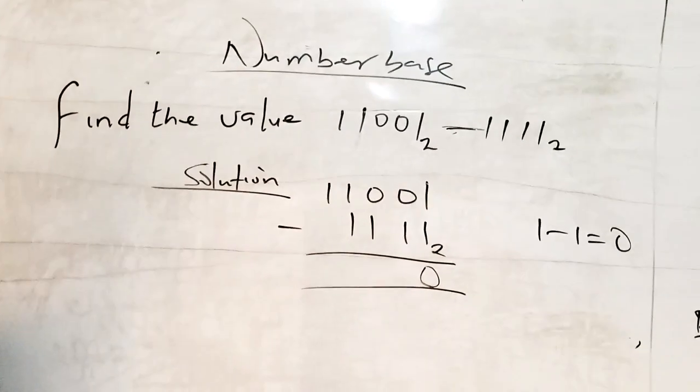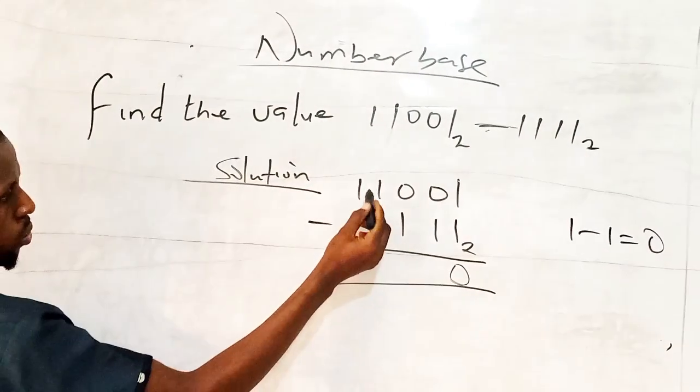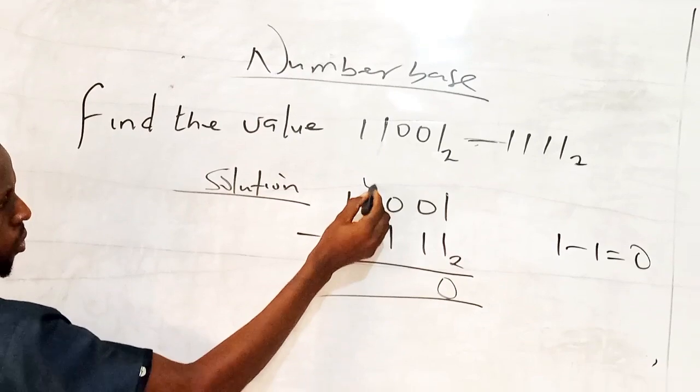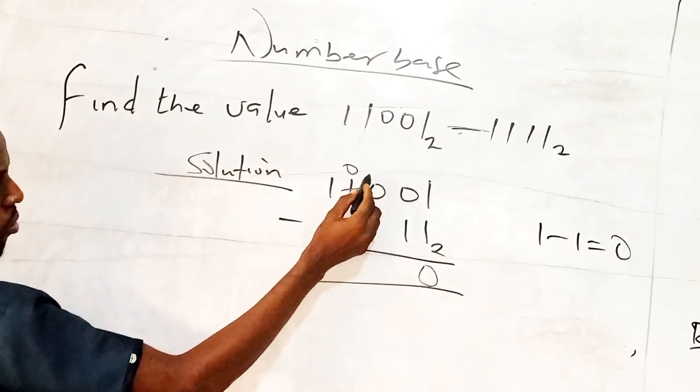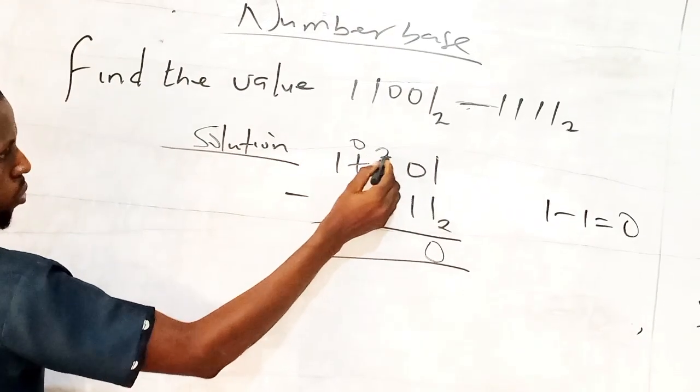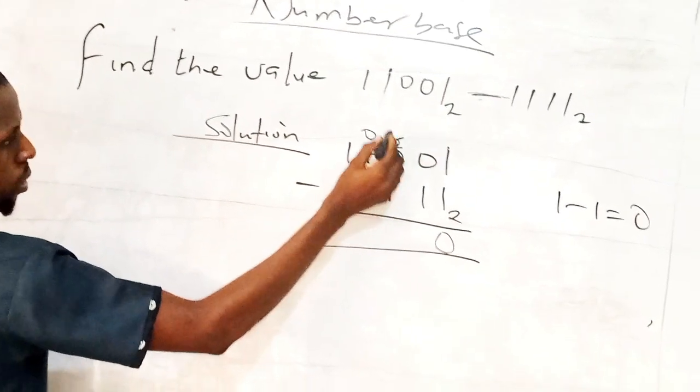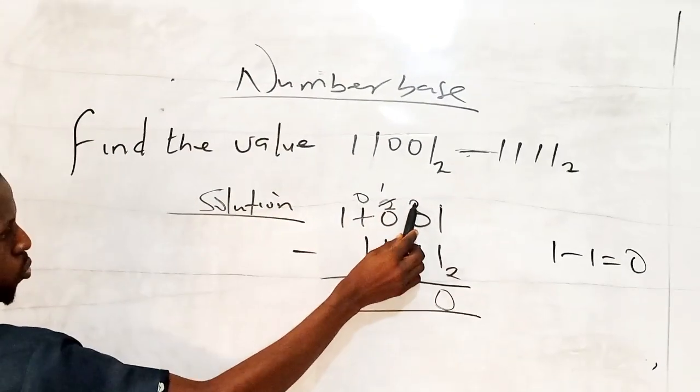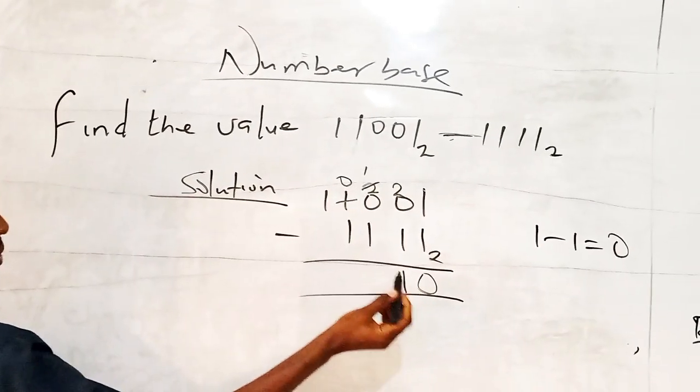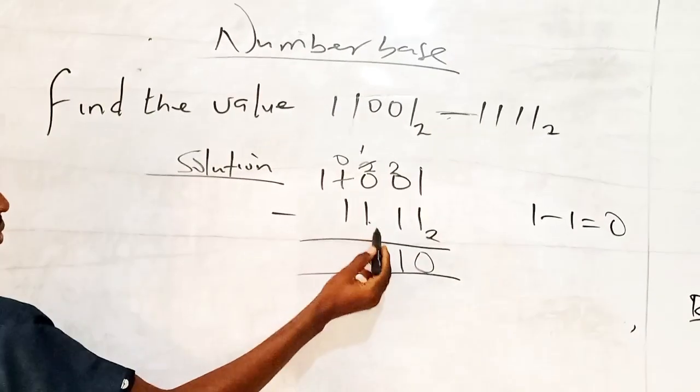Now, 0 minus 1? It's not possible. We have to go and borrow. So when you borrow from here, you have nothing left. So what you borrow, you put it here. It should turn to the base, which is 2. So you borrow from here, you're having 1 as the remainder. By the time you put it here, it turns to the base. So 2 minus 1 is 1. 1 minus 1 is 0.